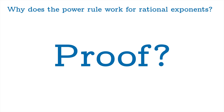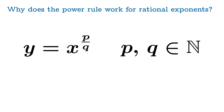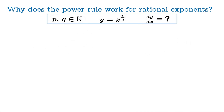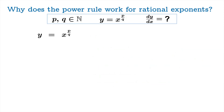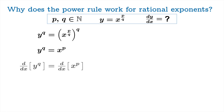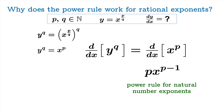Why does the power rule work for rational exponents? We consider the function y = x to the p over q, where p and q are natural numbers, making the exponent a positive rational number. Raising both sides to the q gives y to the q equals x to the p. Taking the derivative of both sides with respect to x: the right side gives p times x to the p minus 1 by the power rule for natural numbers.